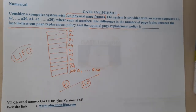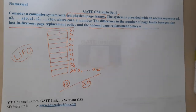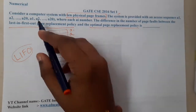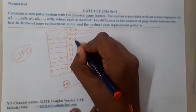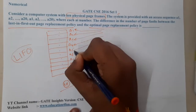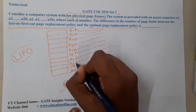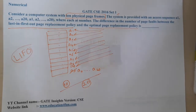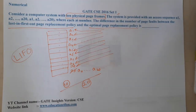Now we start the second pass — a1 to a20 again. We begin replacing things. a1 will be a miss, a2 a miss, a3 a miss, a4 a miss, a5 a miss, a6 a miss, but a7 will be a hit, a8 a hit, a9 a hit. When it comes to a10, we check who came last.